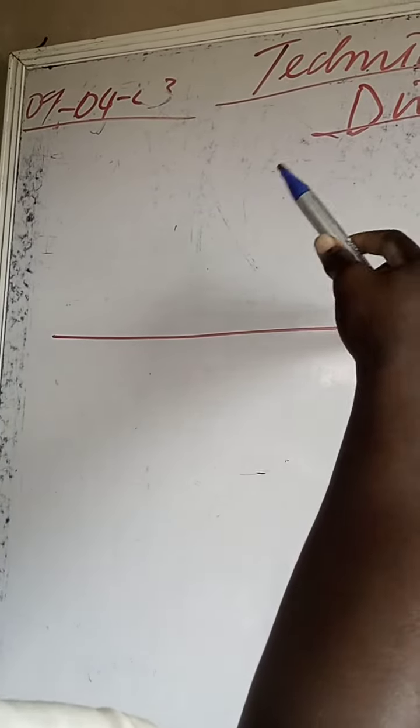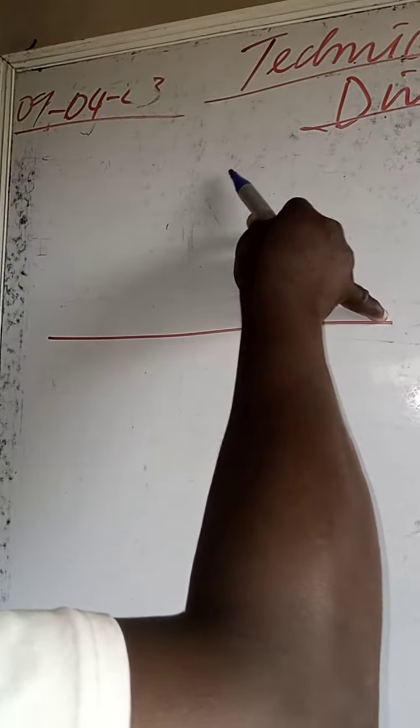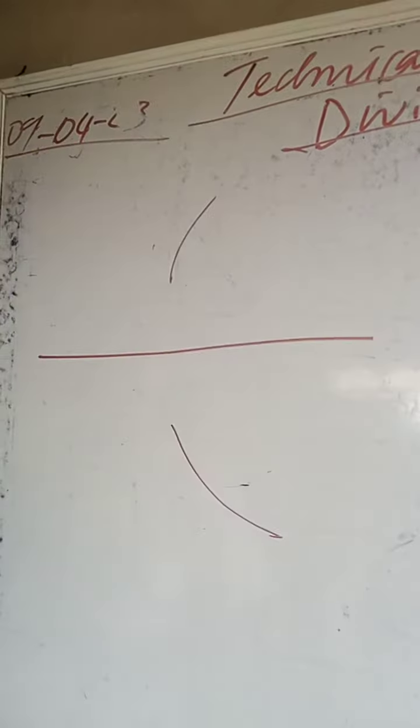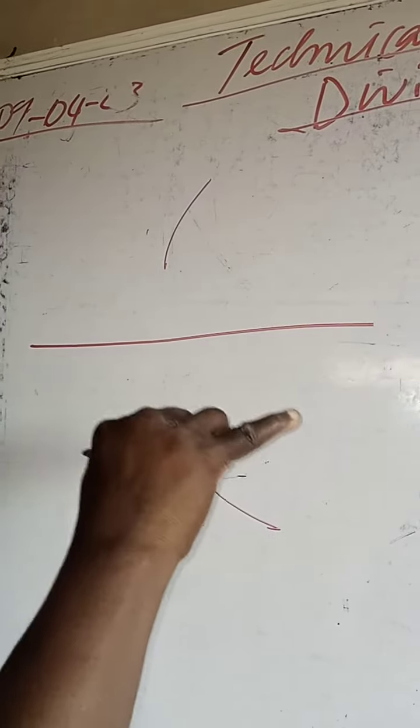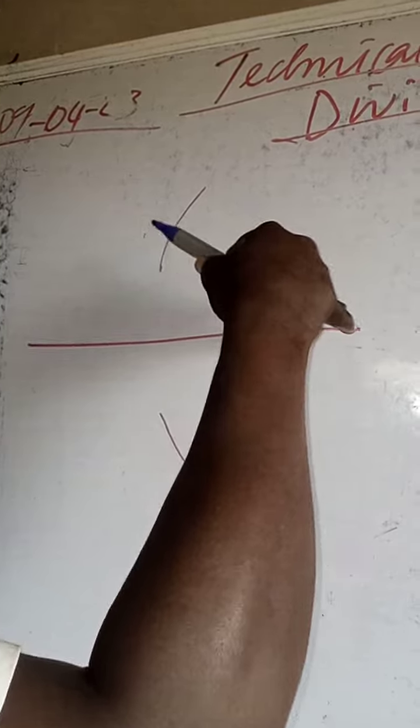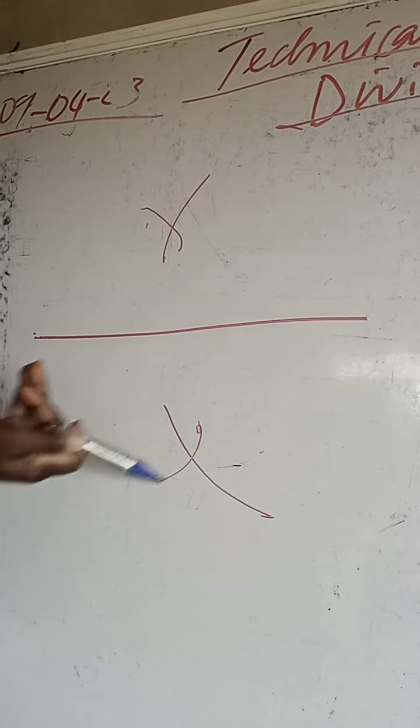You stay on one side, open your compass more than half of this line. Mark an arc above and below. Don't allow your compass to shift. The same radius that you use to draw this arc, you now come to this other side and draw another arc here and another arc here.